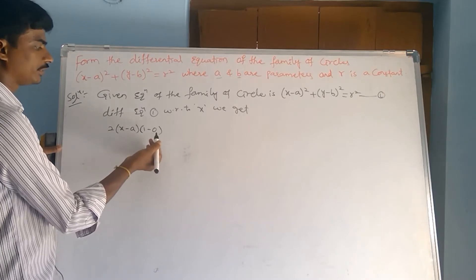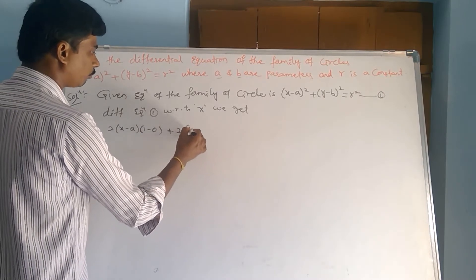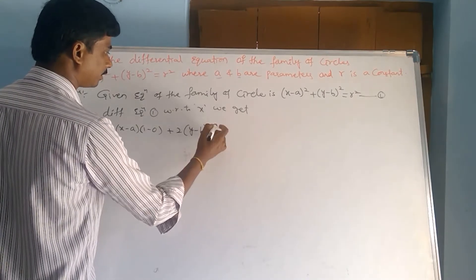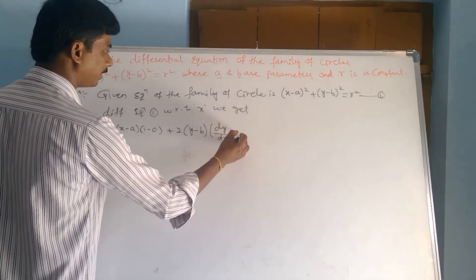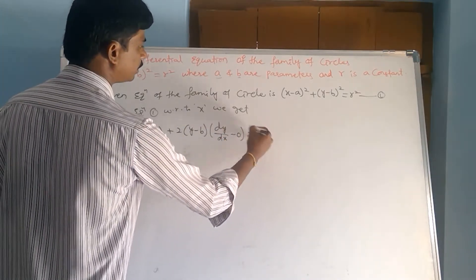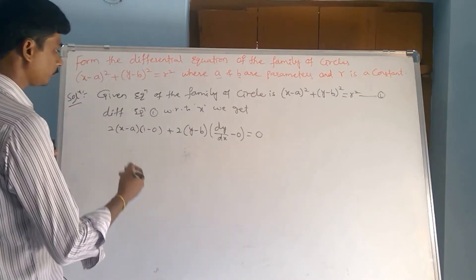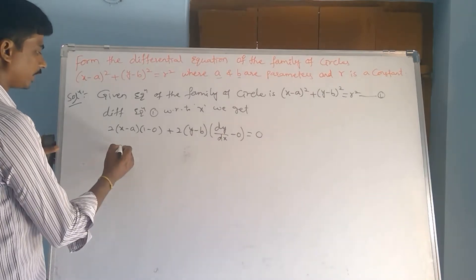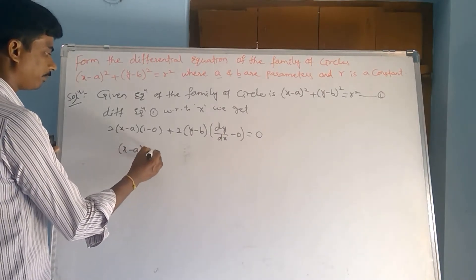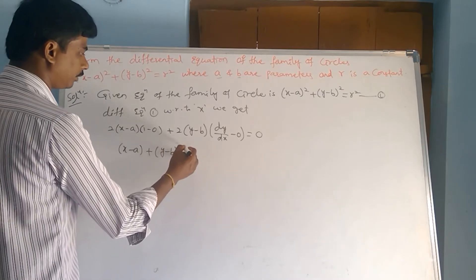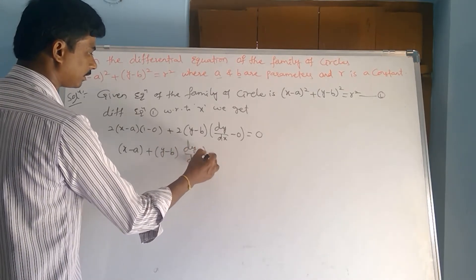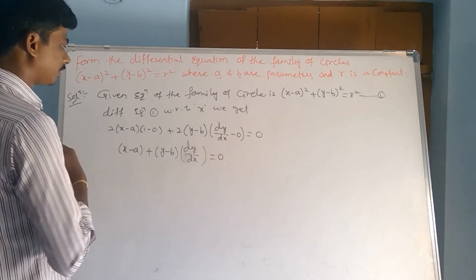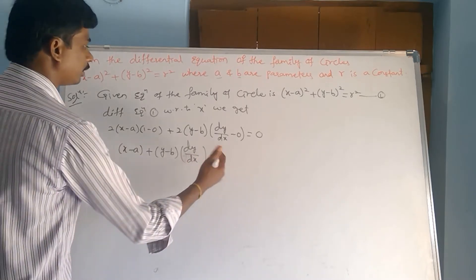dy/dx into constant is 0. Plus 2 into (y minus b), 1 minus 0 times dy/dx — since y is the dependent variable, the constant term is 0. Taking 2 common and moving to the right side gives 0. So we get: (x minus a) plus (y minus b) times dy/dx equals 0. First derivative is complete — this is equation number 2.